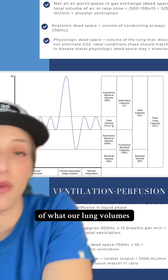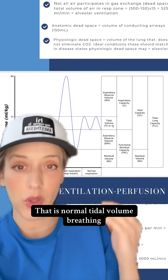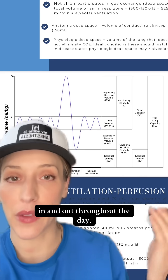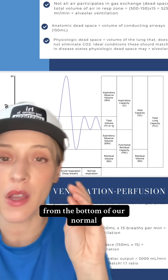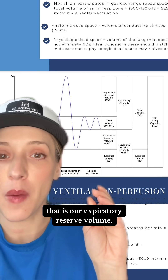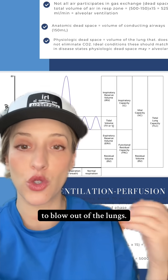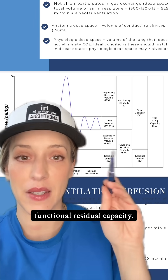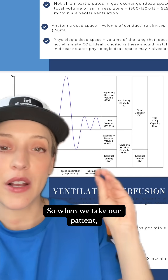This is a graphical representation of what our lung volumes look like. These little up and down movements represent normal tidal volume breathing — your normal in and out throughout the day. When we blow out all the way from the bottom of our normal tidal volume, that is our expiratory reserve volume. Below that comes our residual volume — air that you and I are not able to blow out of the lungs on our own. We add those two together and that is called your functional residual capacity.